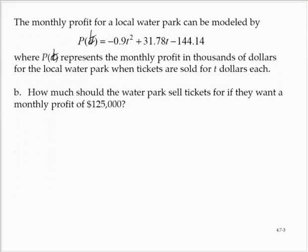How much should the water park sell tickets for if they want a monthly profit of $125,000? So they want P(t) to be 125. Remember that P(t) represents the monthly profit in thousands of dollars, so $125,000 means 125 for this problem.